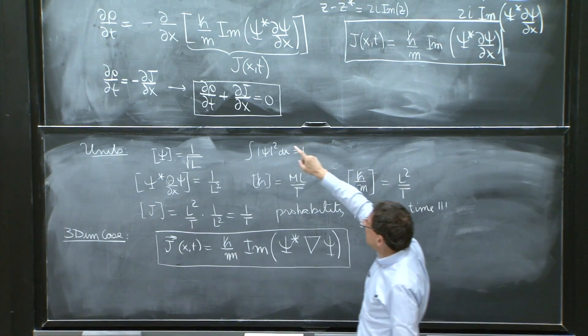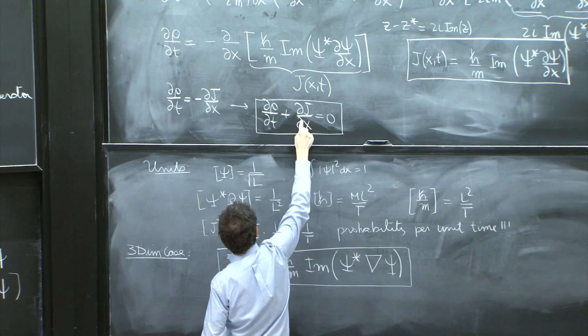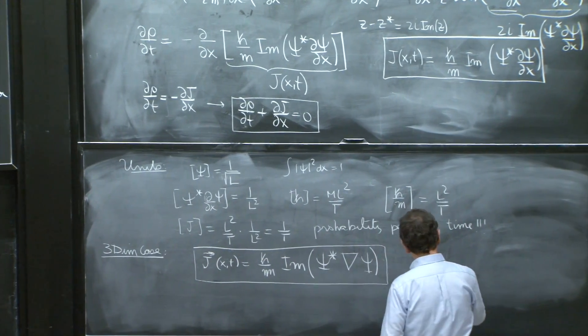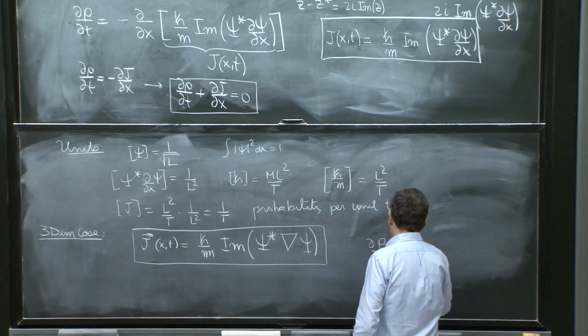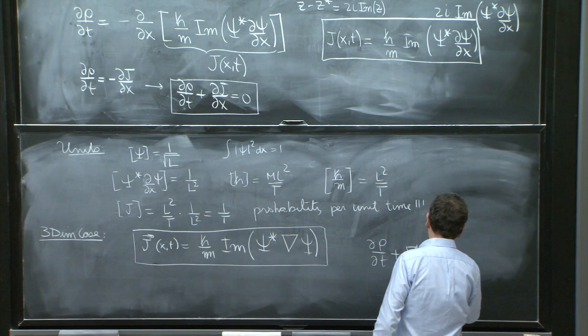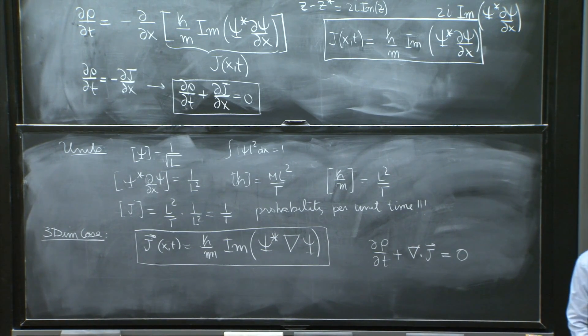And the analog of this equation, d rho dt plus dj dx equals 0, is d rho dt plus divergence of j is equal to 0. That is current conservation.